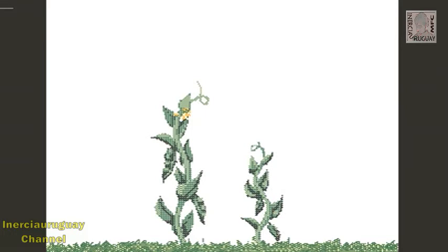Different forms of the same gene are called alleles. The big T represents the allele for tall, and the little t represents the allele for short.